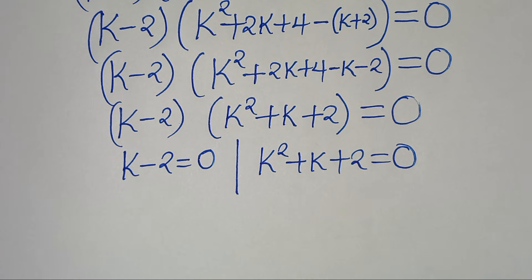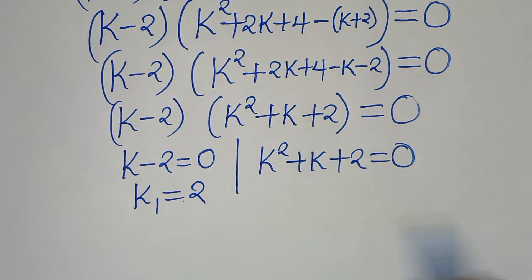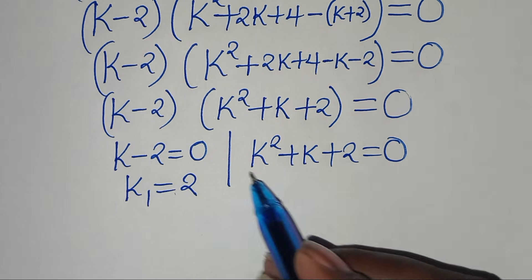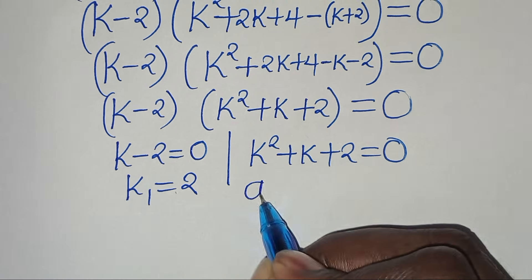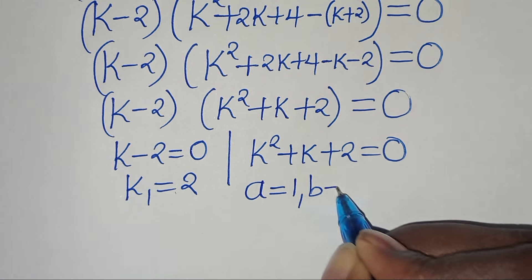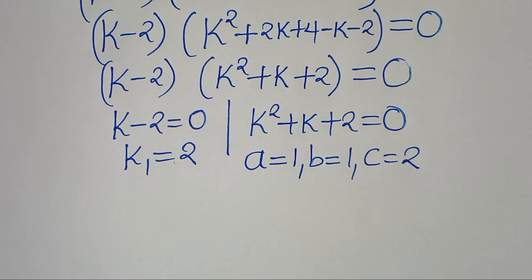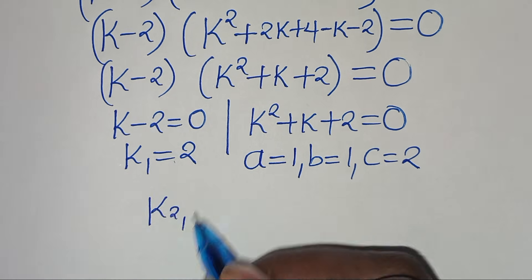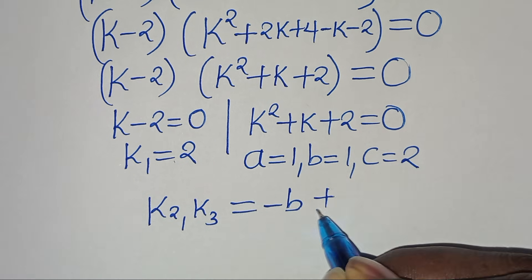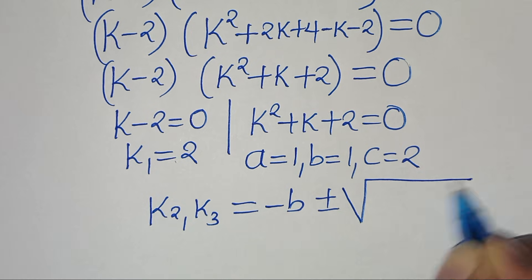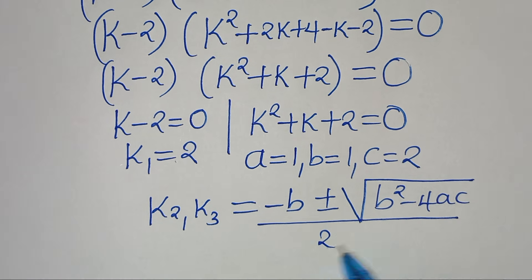This implies we have two parts: k minus 2 equals 0, and k squared plus k plus 2 equals 0. From the first part, k1 is equal to 2. From the second part, we have a quadratic equation where a equals 1, b equals 1, and c equals 2. We can solve for k2 and k3 by applying the quadratic formula, which is minus b plus or minus the square root of b squared minus 4ac, all divided by 2 times a.